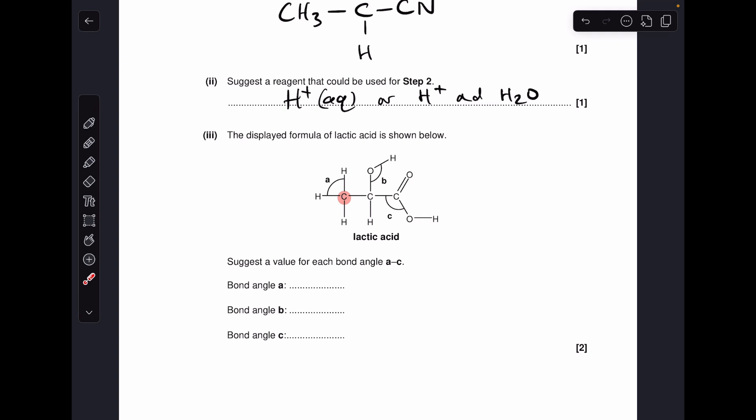Moving on to the bond angles in lactic acid, so I've highlighted the first one, so A, around this carbon. Well, all we've got to do is look at the number of electron regions around that central atom. So you can see we've got one, two, three, four. They're all bonding regions, there's no lone pairs in there, so the angle we get is 109.5 degrees.